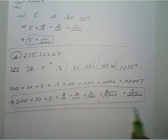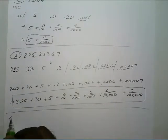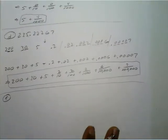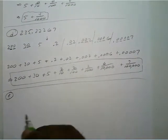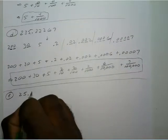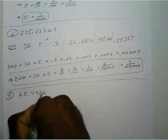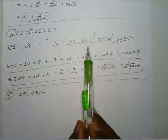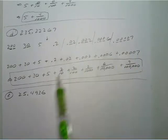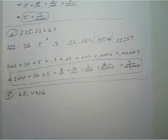Let's verify your answer for E. You have 25.4936. Instead of going through all of those steps, I'm going to show you a quicker version for this one — you can apply this to all the previous ones too. I just wanted you to get the process down first; this is a shortcut for once you're comfortable.